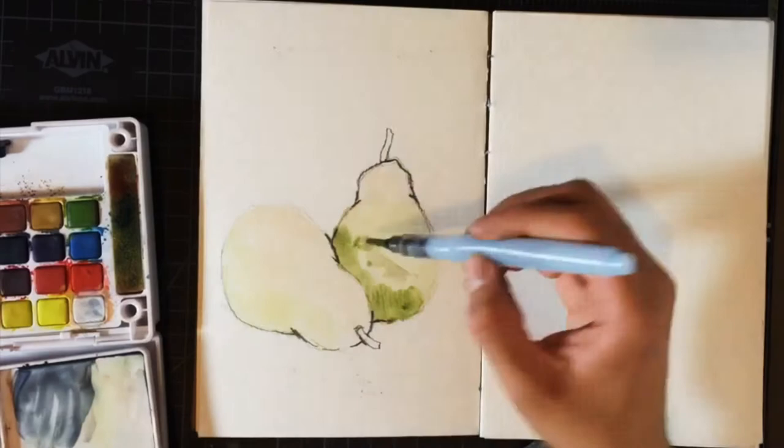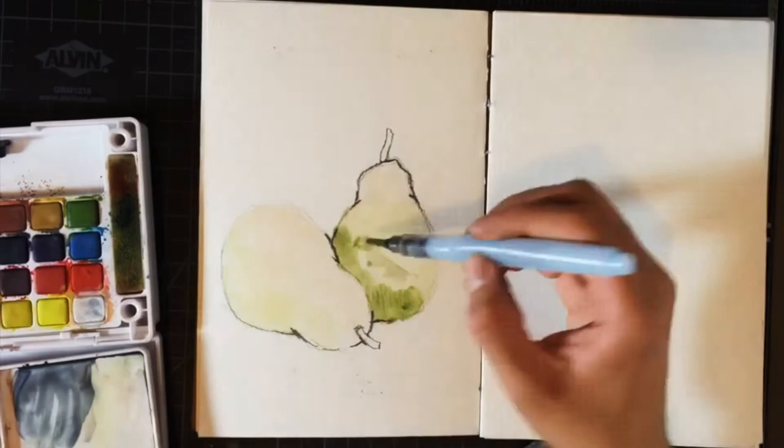Now I use a darker green to show some shadow and I water it down to spread out the colors. And I do the same thing with this pear.